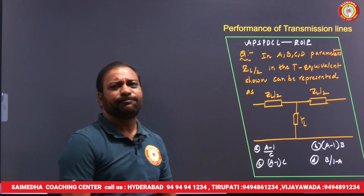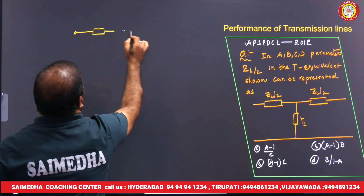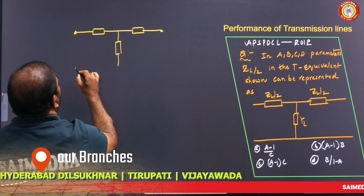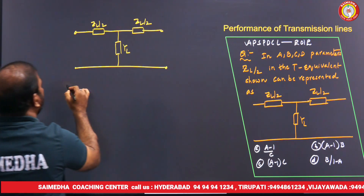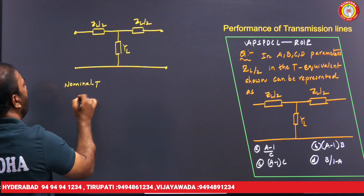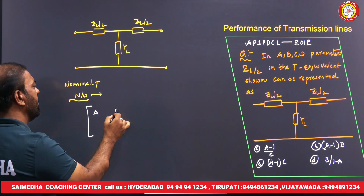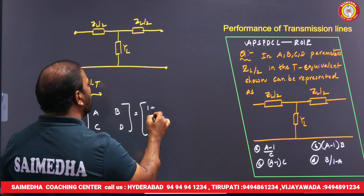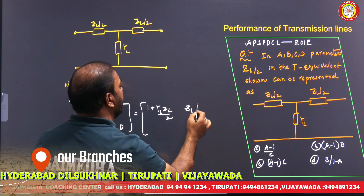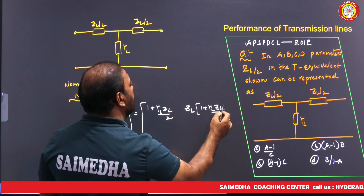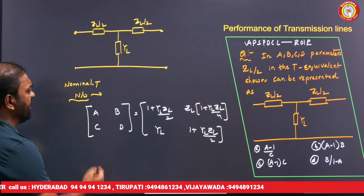In ABCD parameters, the nominal T network has ZL/2 on each series arm and YL as the shunt element. The ABCD parameters for the nominal T network are: A = 1 + YL·ZL/2, B = ZL(1 + YL·ZL/4), C = YL, and D = 1 + YL·ZL/2.